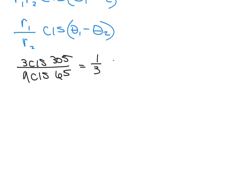We're going to write this as 1 third (r₁ over r₂), 3 divided by 9, and then we do our cis, and we're going to take our first angle minus our second angle and get 1 third cis (305 minus 65), which is 240 degrees. Then we expand that out.